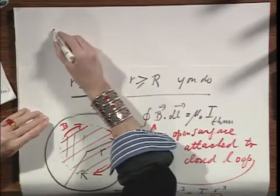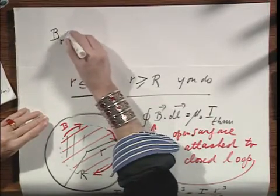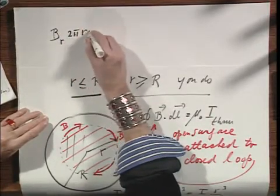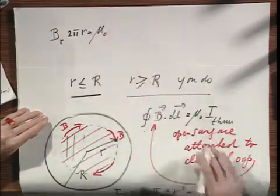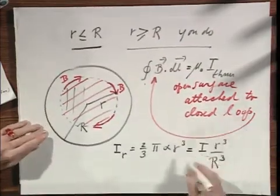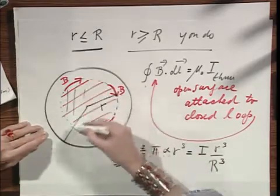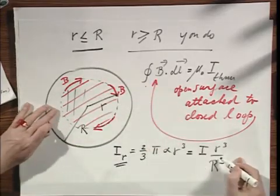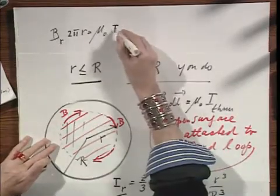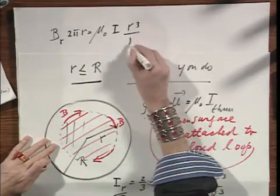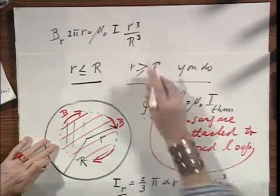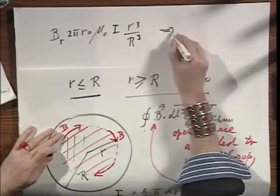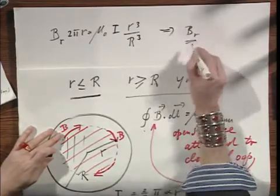And so, we get that B at that distance r, times 2πr, equals μ₀ times the current going through that flat surface, uniquely determined. And that equals I r cubed divided by R cubed. And so, out pops immediately B(r). And what you see is that B(r) is proportional to r squared.